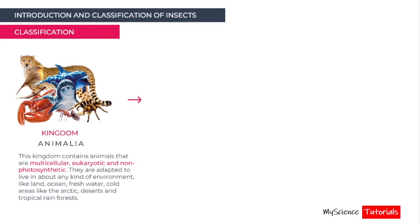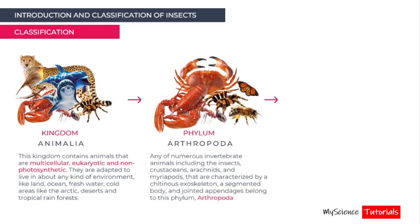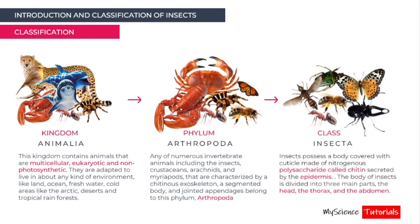Insects fall under the Phylum Arthropoda. All invertebrates in this phylum — including insects, crustaceans like crabs, arachnids like spiders, and myriapods — are characterized by a chitinous exoskeleton, segmented body parts, and jointed appendages. Insects specifically fall under the Class Insecta. So the full classification is Kingdom Animalia, Phylum Arthropoda, Class Insecta.